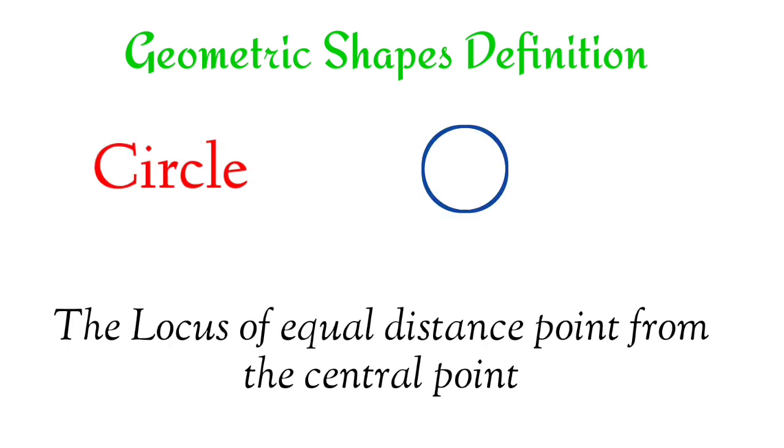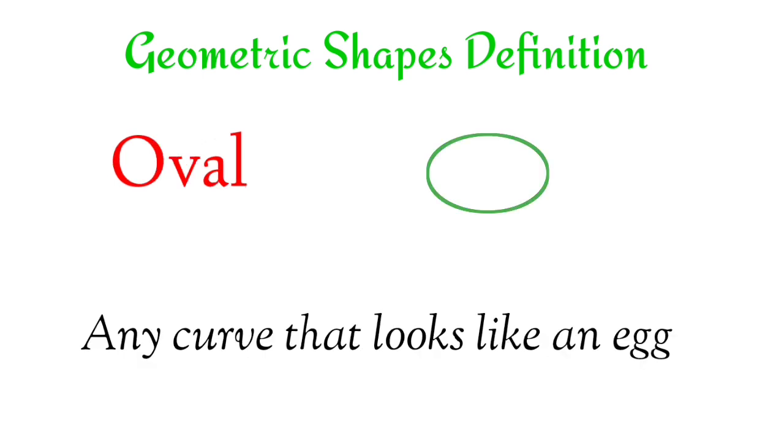Circle. The locus of equal distance points from the central point. Oval. Any curve that looks like an egg.